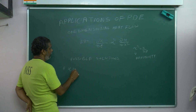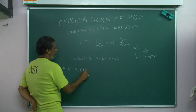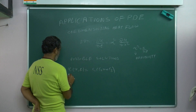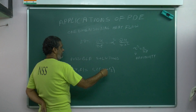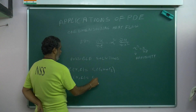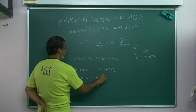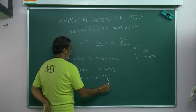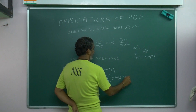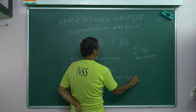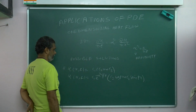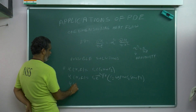You get the solution: u(x, t) = c₁ · e^(α²p²t) · [c₂ cos(px) + c₃ sin(px)]. Or they may get: u(x, t) = c₁ · e^(−α²p²t) · [c₂ e^(px) + c₃ e^(−px)].